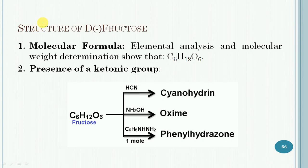The next topic is the structure of D-fructose. The first aspect is the molecular formula. Two main studies are conducted: elemental analysis and molecular weight determination. Both studies suggested that the molecular formula of fructose is C6H12O6.